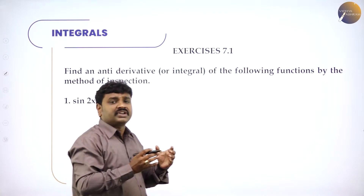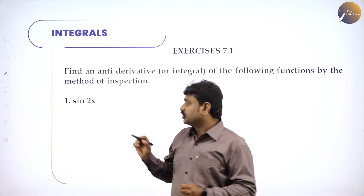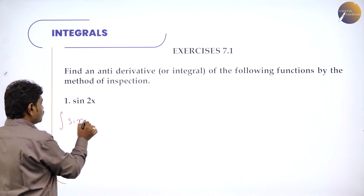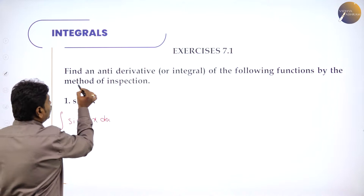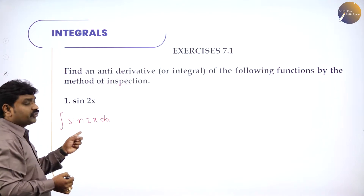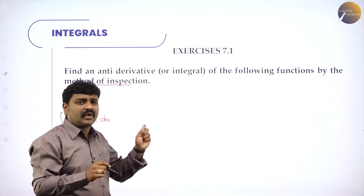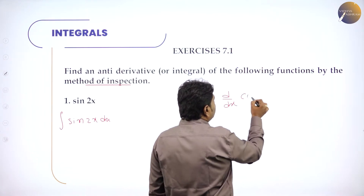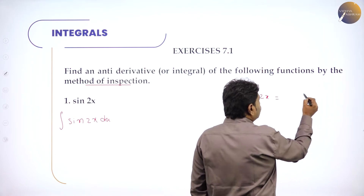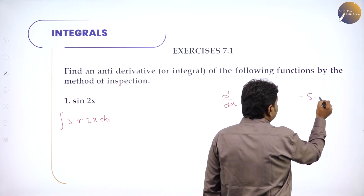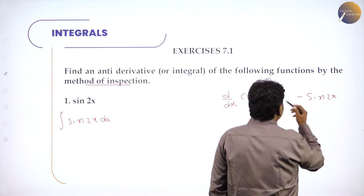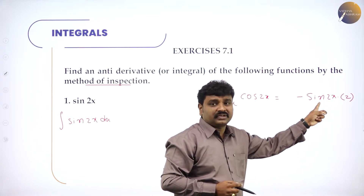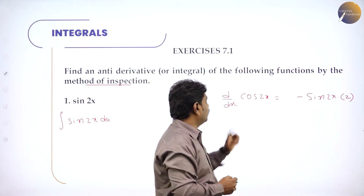Inspection means: what if you differentiate, you will get the question back. So they want you to find the integration of sin 2x. The question is: integration of sin 2x with respect to x, and the method they want is inspection. What if you differentiate, you will get sin 2x? You have an idea that cos 2x — what is the derivative of cos 2x? I don't want the factor of 2, so I will divide it by 2.